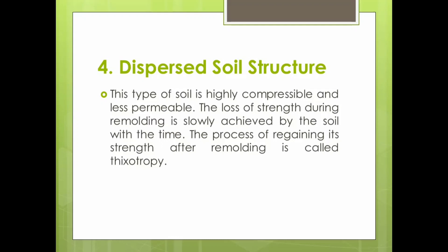As time passes, the soil structure settles down, and after some time the strength will be achieved again. The process of regaining its strength after remolding is called thixotropy. Thixotropy is a terminology referred to dispersed soil structure. Technically, thixotropy is the process of regaining strength after remolding — meaning after you change the shape of the soil structure, after a certain time the soil structure will regain its lost shear strength.